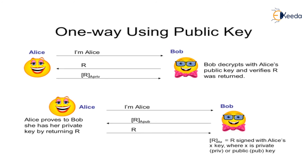One-way authentication using public keys: Alice sends a message to Bob, Bob replies with a challenge R, and Alice replies back using her own private key to encrypt R. Bob then decrypts the received message using Alice's public key to verify that the message Bob sent to Alice is the same one returned. This uses asymmetric encryption — one user encrypts with a private key and the other decrypts with the corresponding public key.